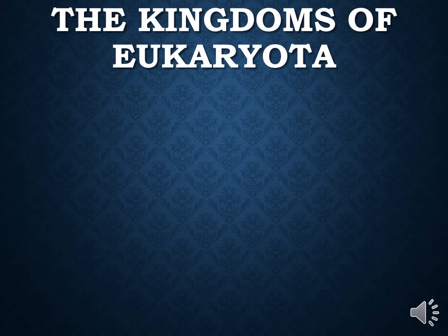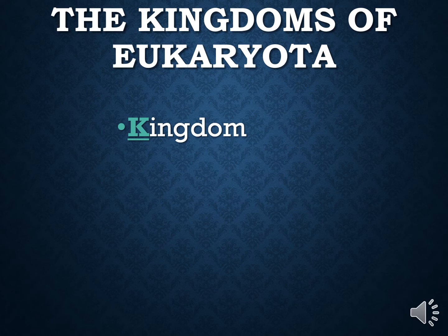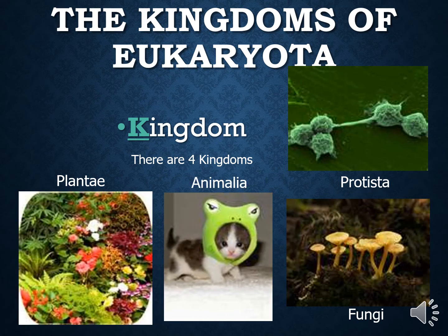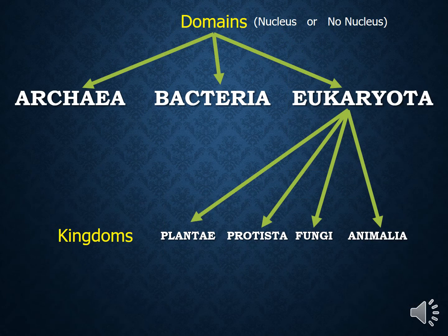Let's look at the kingdoms of eukaryotes. There are four kingdoms in which we put living eukaryotes: Plantae, Protista, Fungi, and Animalia. Every living eukaryote fits into one of these four kingdoms. To draw a visual classification, we use a classification tree — domain at the top with the rule 'nucleus or no nucleus,' and once you decide that, you reach Eukaryota, which branches into four choices: Animalia, Fungi, Protista, and Plantae. Pause the video and draw this in your notes.